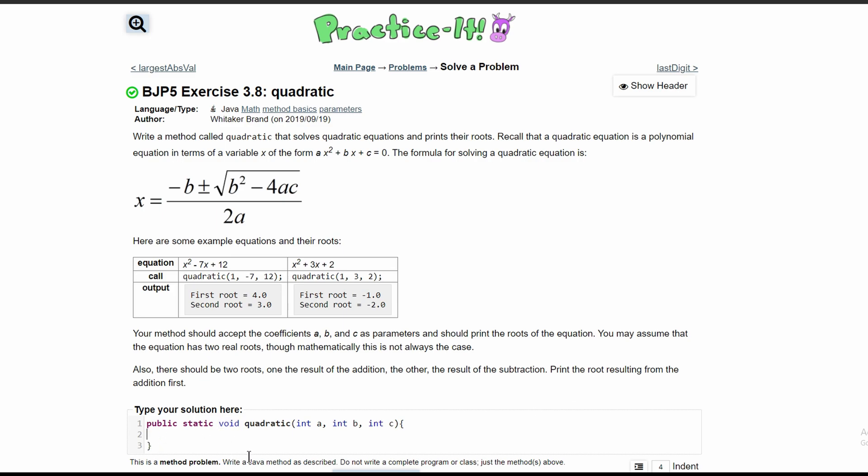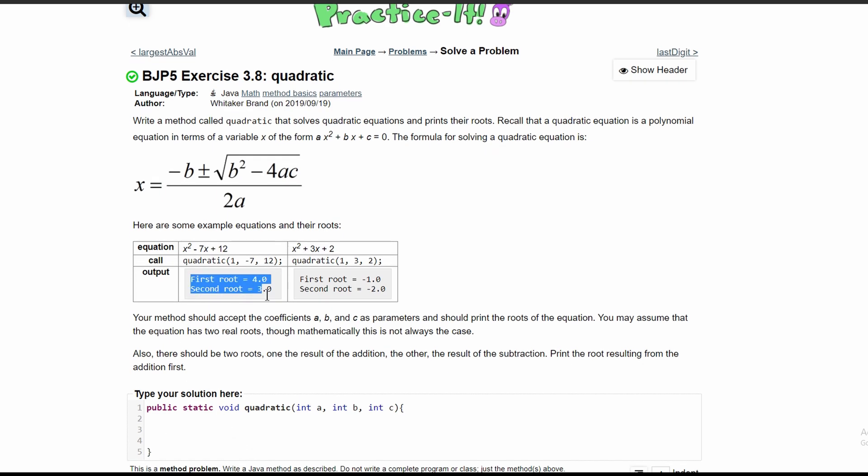In here, we are first going to look at our output. I have a System.out.println, and in here we'll have our output first root equals, and we will store our first root in root1. We are going to duplicate this but change a couple of things. We need to change this to be second root, and this is going to be stored in root2.